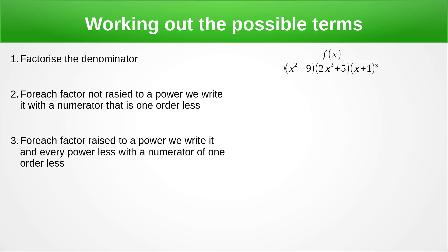Now the one I've got here is almost factorized already but of course this can be written as (x + 3)(x - 3). And then for each factor not raised to a power we write it with a numerator that is one order less.